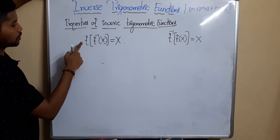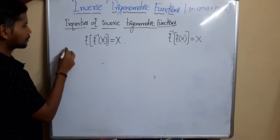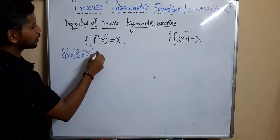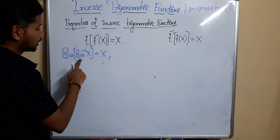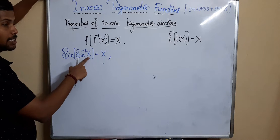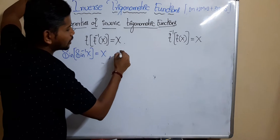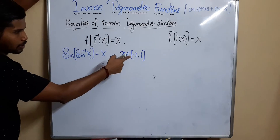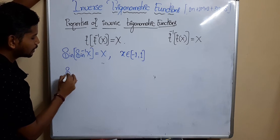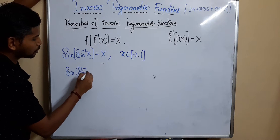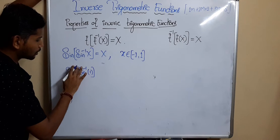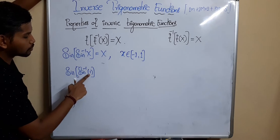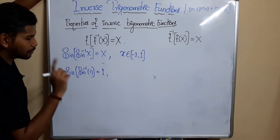The first property: sin(sin⁻¹(x)) = x. The inverse sine is defined for particular values, so x belongs to the domain [-1, +1]. For example, taking the upper limit value: sin(sin⁻¹(1)) — according to this property, the value will be 1.